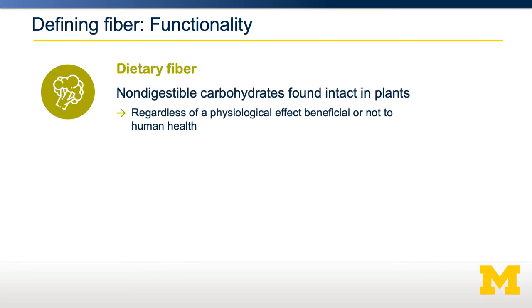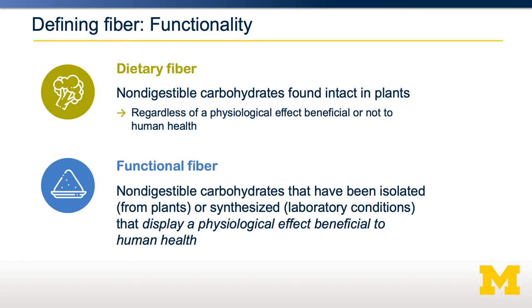But what defines a fiber? There are a few different definitions. A dietary fiber is a non-digestible carbohydrate that is found intact in plants. A functional fiber, on the other hand, is still a non-digestible carbohydrate — it might have been isolated from plants or synthesized under laboratory conditions — but it must display a physiological benefit to human health. That's what distinguishes a functional fiber from a dietary fiber: the benefit to human health.